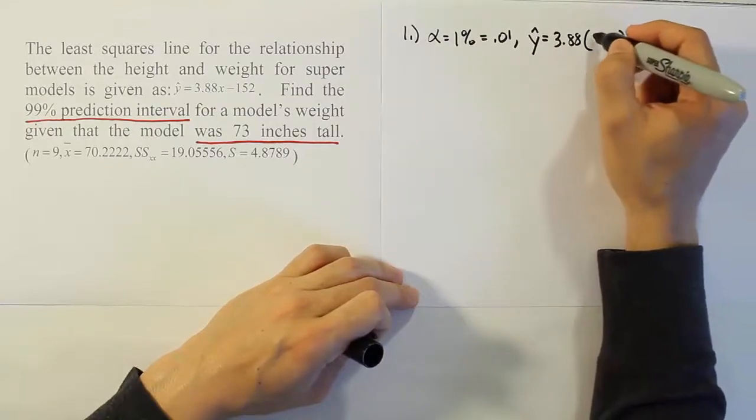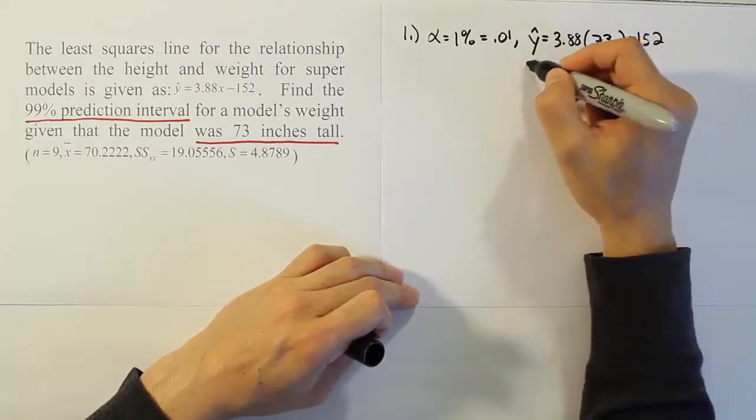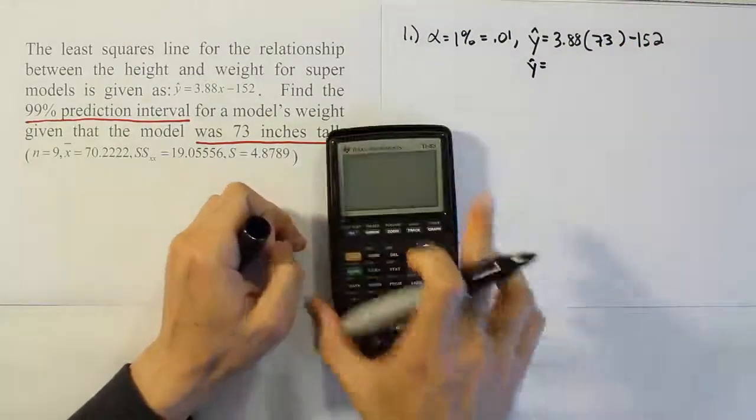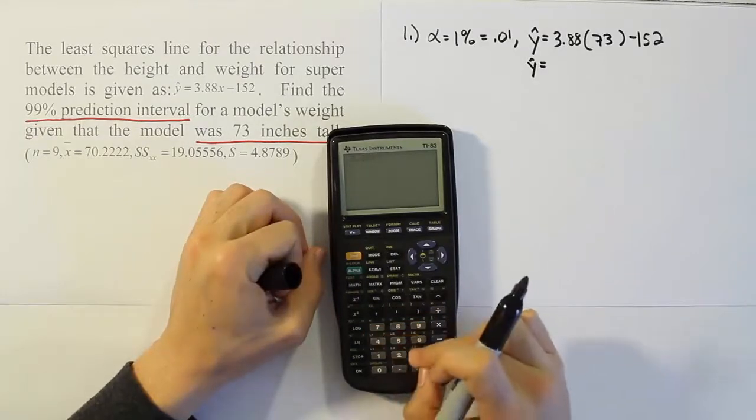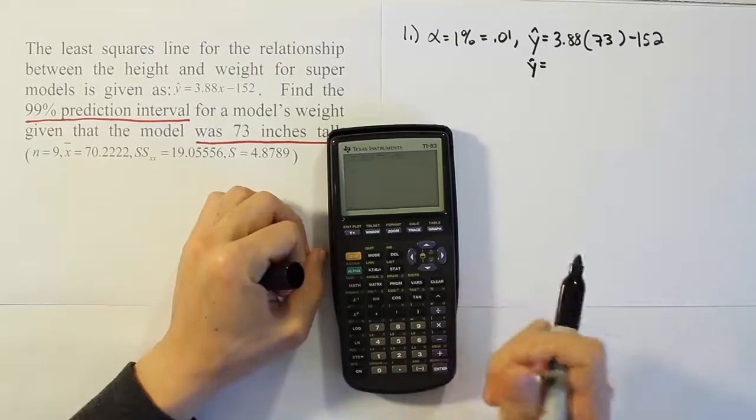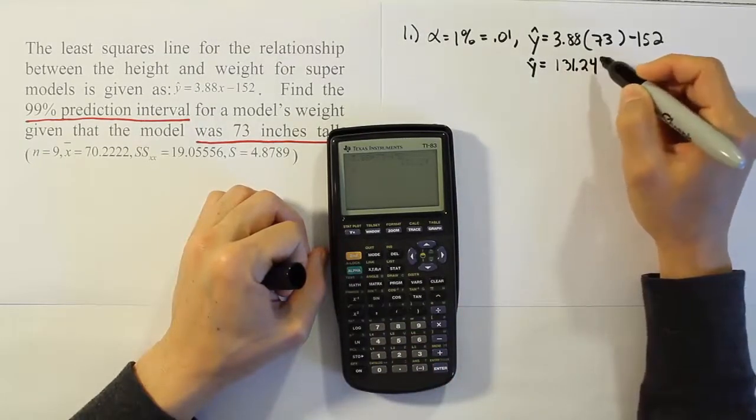Plugging in 73 to see what our answer is for y hat. So we'll have 3.88 times 73 minus 152. And when we're done we get the answer 131.24.